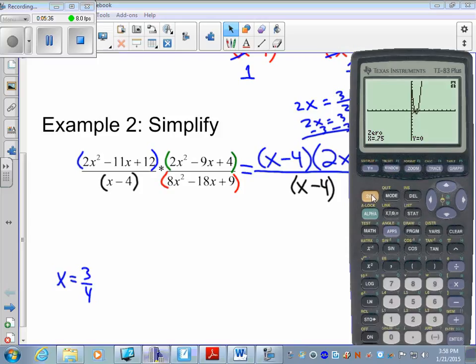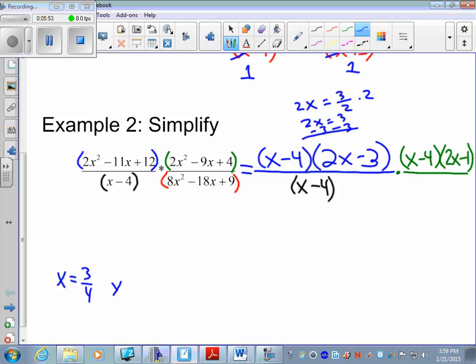0.75 is 3/4, that's one x-intercept. The other x-intercept, do the same thing, second trace, zero. Left of the second x-intercept below the x-axis, hit right key to go above for right bound. Get 1.5, so x equals 3/4 and 3 halves. The two factors are 4x minus 3 and 2x minus 3.